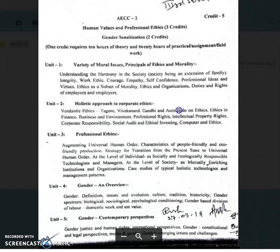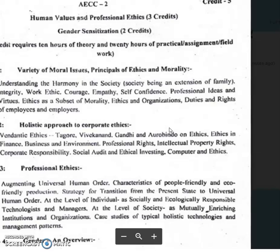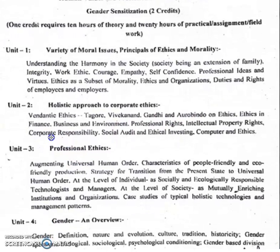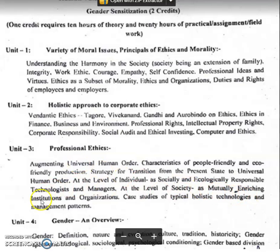Unit 3: Professional Ethics — Augmenting Universal Human Order. Topics include: Characteristics of People-Friendly and Eco-Friendly Productions, Strategy for Transition from the Present State to the Universal Human Order, at the level of individuals as a socially and ecologically responsible technologists and managers, institutions and organizations, and Case Study of Typical Holistic Technologies and Management Patterns.